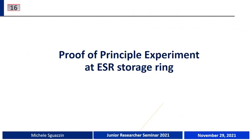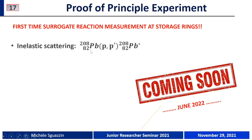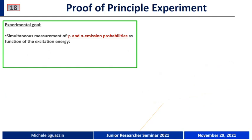Now I come to the first experiment in the NECTAR project: the proof-of-principle experiment at the ESR storage ring. This will be the first time we combine the surrogate reaction method in inverse kinematics with storage rings. This experiment will take place in 2022, using the surrogate reaction of inelastic scattering of lead-208 with protons, in order to infer the neutron-induced reaction cross-section of lead-207. We will simultaneously measure the gamma and neutron emission probabilities as a function of excitation energy.